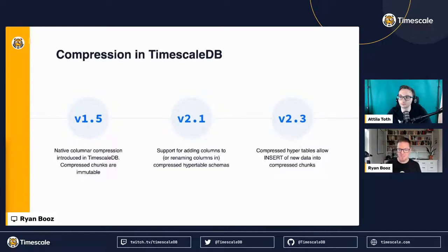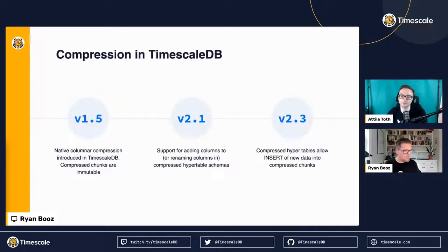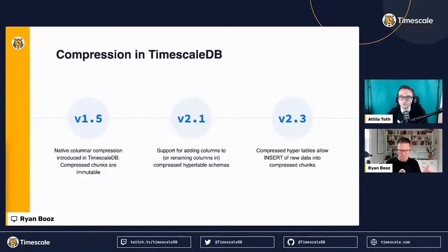In version 2.1, we added the ability to add and rename columns to a compressed hypertable. This lowered the bar in one sense, so people who weren't using compressed hypertables because of that limitation could now compress their data knowing that if they had to add or rename a column in the future, they could do that. And then in version 2.3, we added the ability to insert rows — insert only — into compressed chunks. Previously, if you inserted data whose time range corresponded to a compressed chunk, you would get an error saying you cannot modify a compressed chunk.